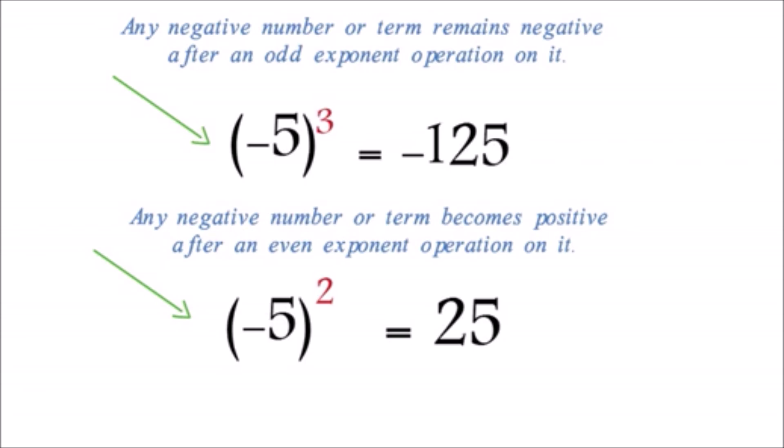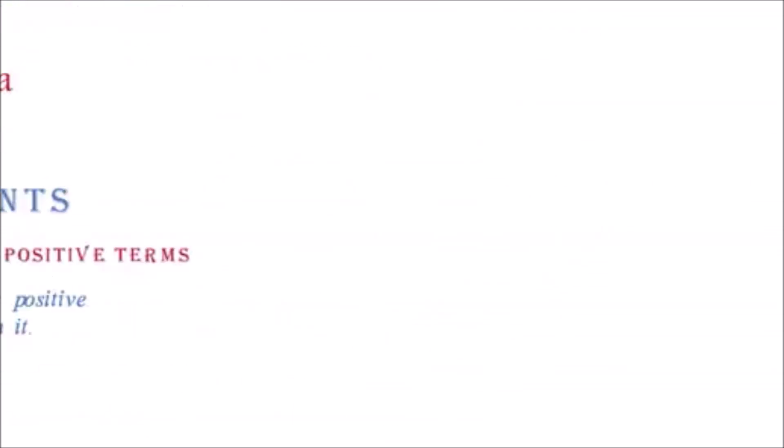Exponents on monomials. Now, we look at how to work with exponents on monomials. Example: expand, begin parentheses, negative 2a cubed b in parentheses all squared.